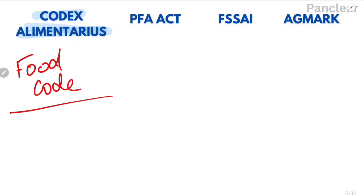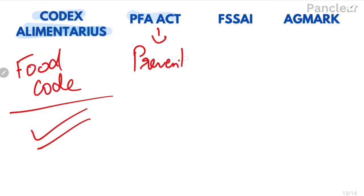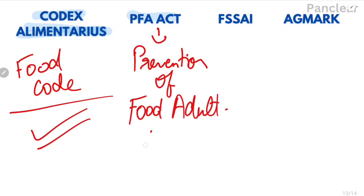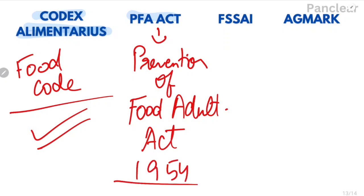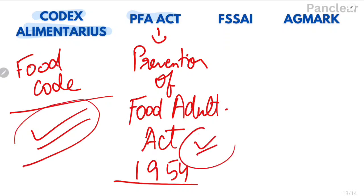If food complies with Codex Alimentarius at the international level, and with the PFA Act — Prevention of Food Adulteration Act, postulated in 1954 in India — then it will be approved. If food in India complies with both Codex Alimentarius and the PFA Act, it will be considered fit for market.